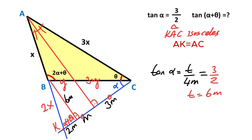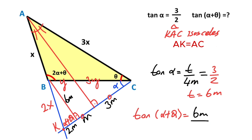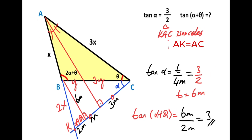So now we can calculate tangent of alpha plus theta easily. Tangent of alpha plus theta equals 6m over this side, which is going to be 2m. This was the first method.